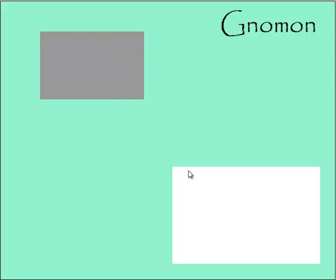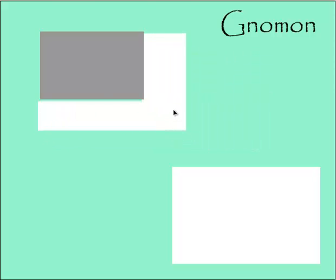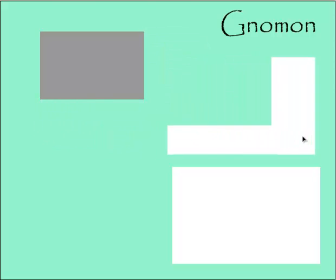What a gnomon is, is a shape that if I add it to the gray rectangle — just attach it on — I would end up with the same size rectangle as the similar rectangle. So if I attach this L-shape to my gray rectangle, I get a rectangle that is the same size as the larger similar rectangle. So this L-shape is gnomon to the gray rectangle. There's one gnomon shape.